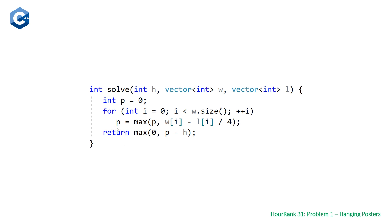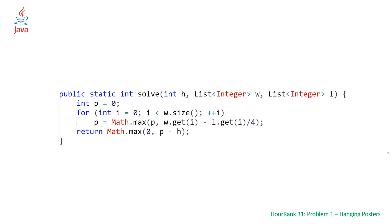Once we have the maximum point P, we return the maximum of 0 and P minus H. The Java solution is almost identical with only minor syntactical differences: we call Math.max instead of max, and we use the .get method instead of bracket operators to access list elements.